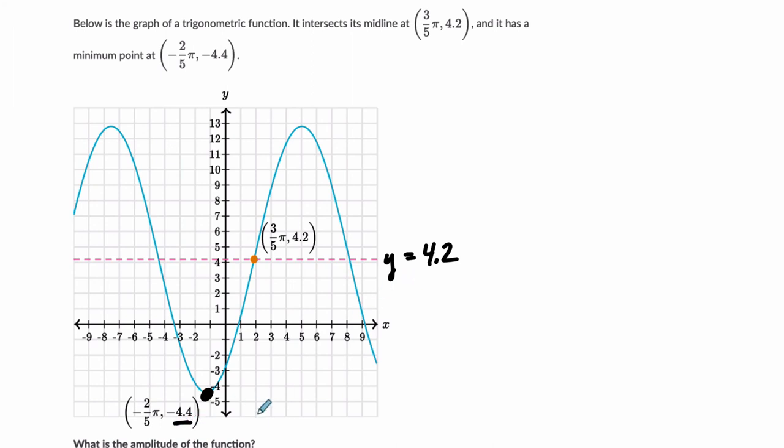So I just subtract this minimum, negative 4.4, from the midline, and then take the absolute value. And again, you could do it the other way, 4.2 minus negative 4.4, and take the absolute value of that. Either way, we get the same thing. We get 8.6, and that's our amplitude. And that's just the distance here between the midline and your minimum. So you're just finding that distance, that absolute value. Hope this helped.